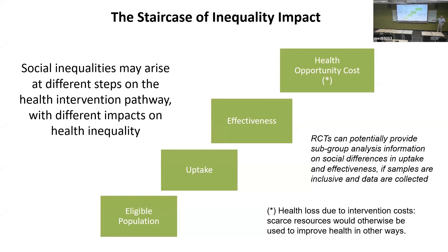The reason it's complicated is that on the route to a health inequality impact, there are at least four steps. The first is who receives the intervention — the eligible population, basically the prevalence of the condition, which is very often socially patterned. For example, smoking: more disadvantaged people tend to smoke more. So it seems obvious a smoking intervention would benefit poorer people. Not necessarily, because then we've got the next step: uptake. Who is actually going to use the intervention? Who turns up to the smoking cessation clinic?